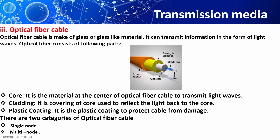Cladding is the covering of the core, which is used to reflect the light back to the core. Plastic coating is used to protect the cable from damage. Fiber optic cable can be either single mode, which supports a segment